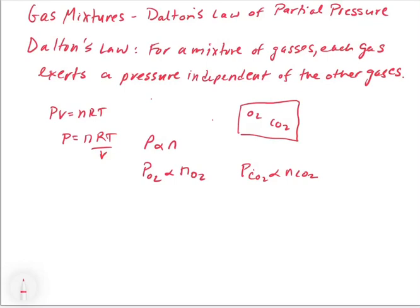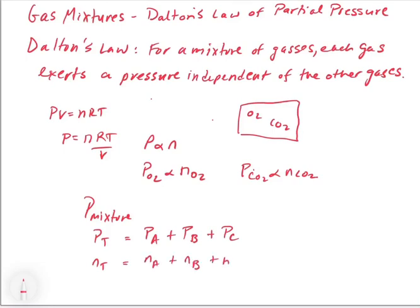We can take all of these various pressures and add them up to get the total pressure. So the pressure of a mixture, or P total, is equal to the pressure of A plus the pressure of B plus the pressure of C. Similarly, the number of moles total equals the number of moles of A plus the number of moles of B plus the number of moles of C. These two concepts allow us to derive an equation for partial pressure in terms of moles of a specific gas relative to total moles.